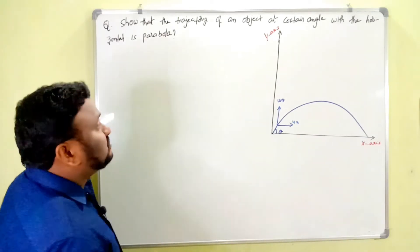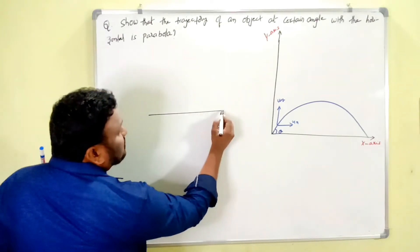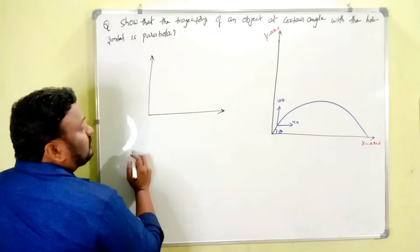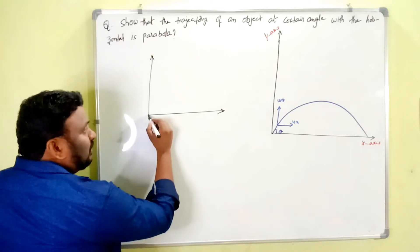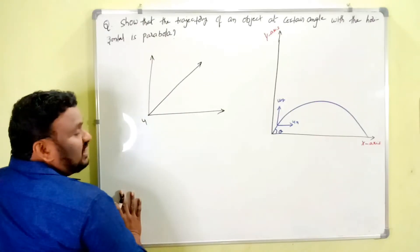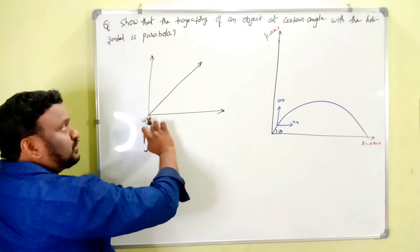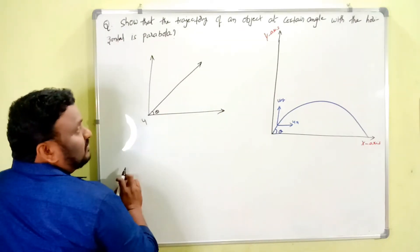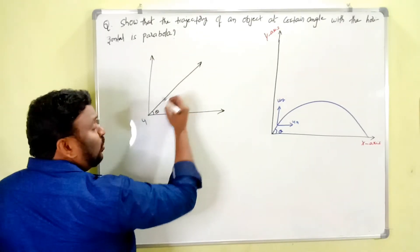Here the horizontal is the x-axis and vertical is the y-axis. From the point of projection, the body is projected with velocity u at an angle theta with the horizontal.